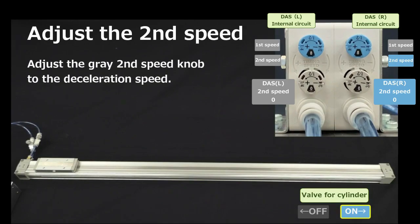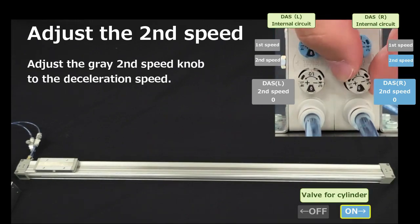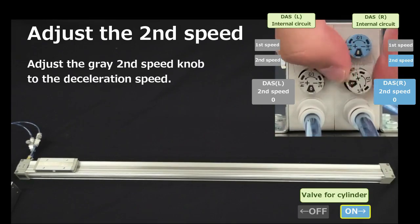Now, you can adjust the second speed. Gradually open the grey second speed knob until the desired speed is reached, and allow the cylinder to reach the stroke end.